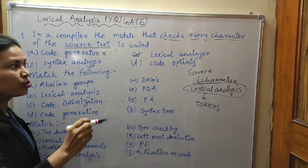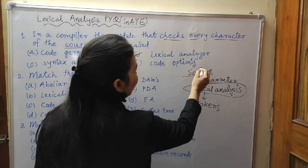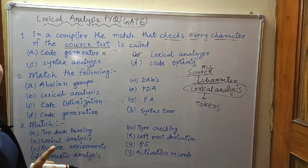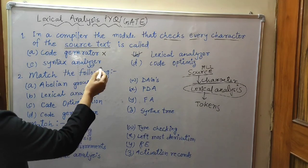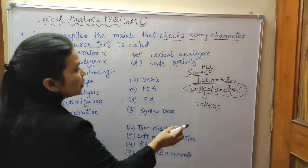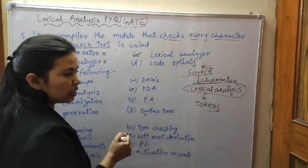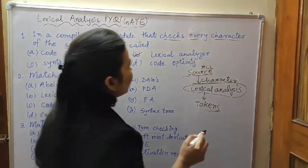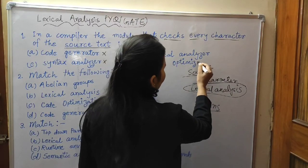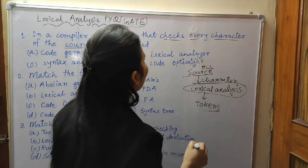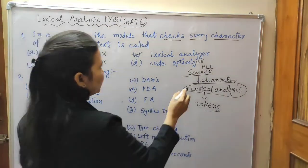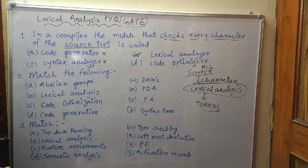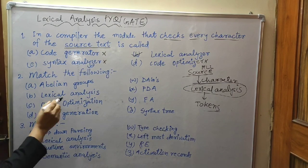Option B, lexical analyzer, is the correct answer. Code generator is the last phase and does not check source text. Syntax analyzer takes tokens as input and generates a parse tree. Code optimizer is also wrong. So option B, lexical analyzer, is correct.